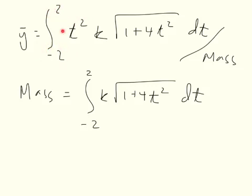So y bar is equal to the integral from the time that we're at the beginning of the curve to the time that we're at the end of the curve, the y-coordinate of the curve times our density times this length of a curve piece, all divided by the mass, and the mass is an integral from our starting time on the curve to our ending time on the curve of our density times the length of the pieces that we encounter as we move in chunks dt. And so what's left is to evaluate these sort of unpleasant-looking integrals.